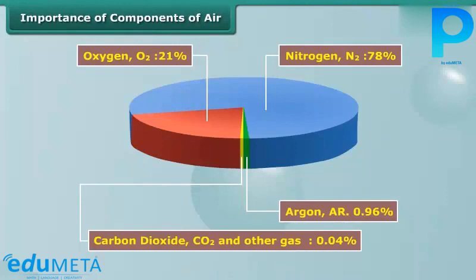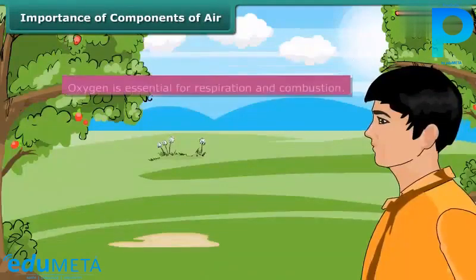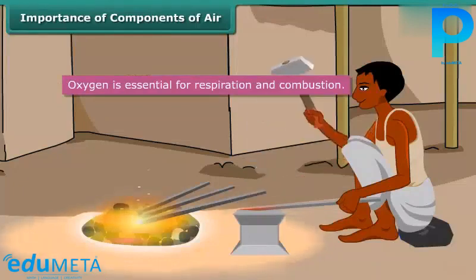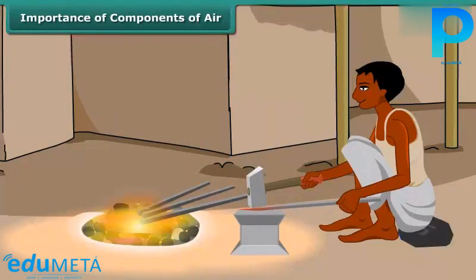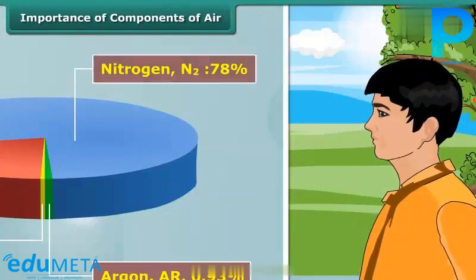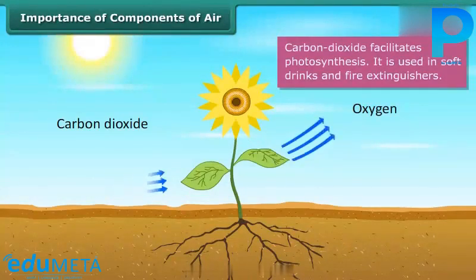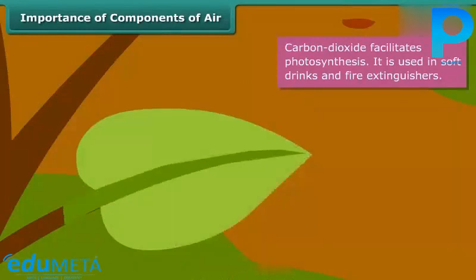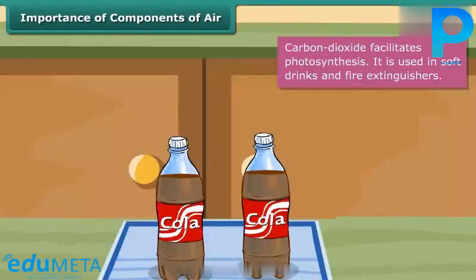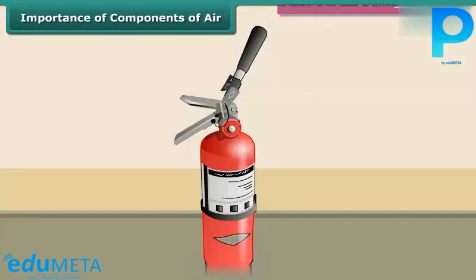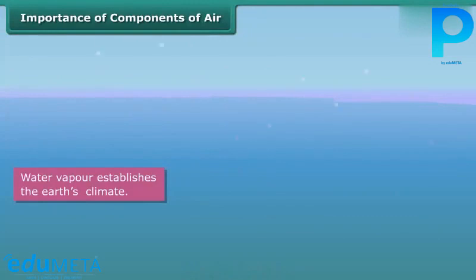Every component of air is important and has a role to play. Oxygen is essential for respiration and therefore for the survival of all life forms; it supports combustion and is required in the process of burning. Nitrogen is present in proteins which are vital for living beings and helps plants manufacture their proteins; it does not support combustion. Carbon Dioxide facilitates photosynthesis, prevents grains from being destroyed by insects, is used to prepare soft drinks as it dissolves in water, and is contained in fire extinguishers. Water vapour plays an important role in the water cycle and helps maintain the temperature on earth by trapping infrared radiation of the sun.